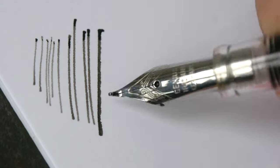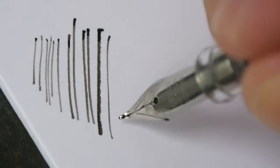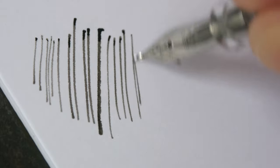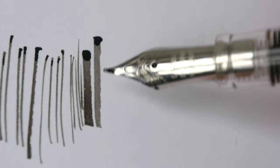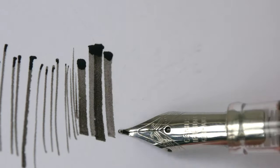You can get different types of lines depending on how you hold the pen. So to get thin lines, you just have to draw with the pen tip. Ink flow is quite good.